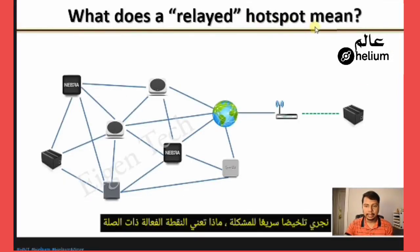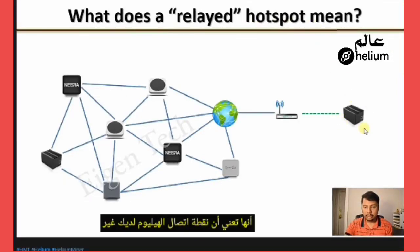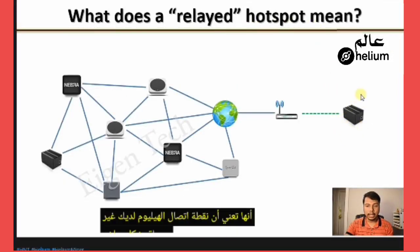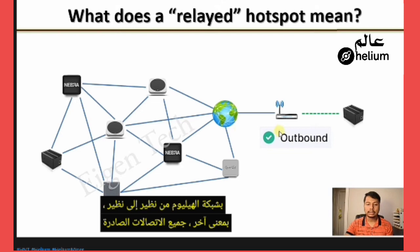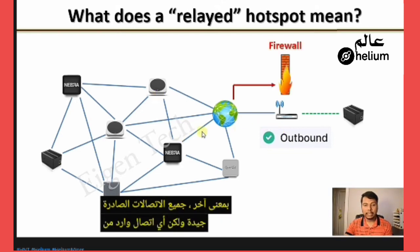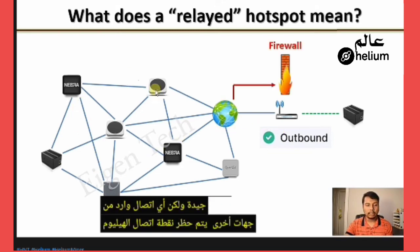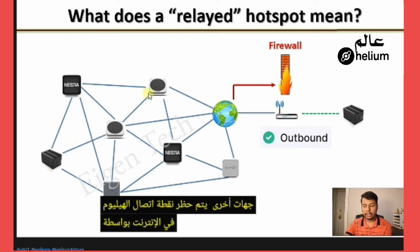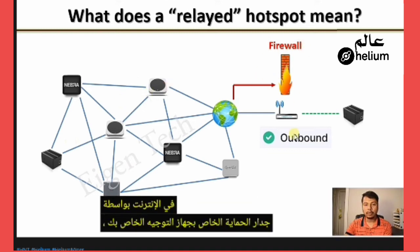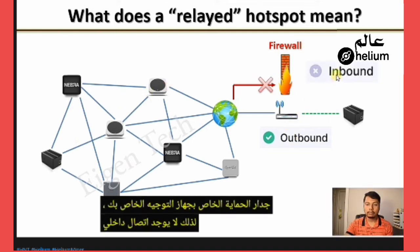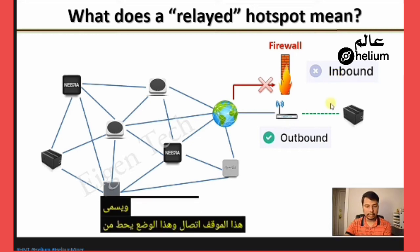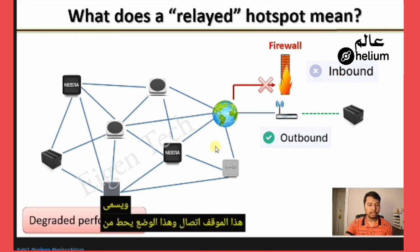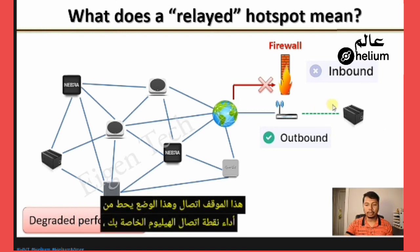A relay hotspot means that your Helium hotspot is not directly connected to the peer-to-peer Helium network. All outbound connections are fine, but any inbound connection from other Helium hotspots on the internet is blocked by the firewall of your router. So there is no inbound connection, and this situation is called relayed. This degrades the performance of your Helium hotspot.